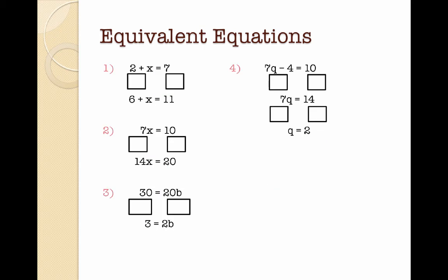In these examples I'm asking you to work out what operation I need to do to both sides of my equation in order to get the equivalent equation. For example, in example 1 I have 2 plus x equals 7 and I need to get to 6 plus x equals 11. What am I doing to both sides? On the left hand side I'm adding 4, so on the right hand side I'm also adding 4. Pause the video now and try to work out what examples 2, 3, and 4 are — what operations are you doing to both sides of the equal sign?